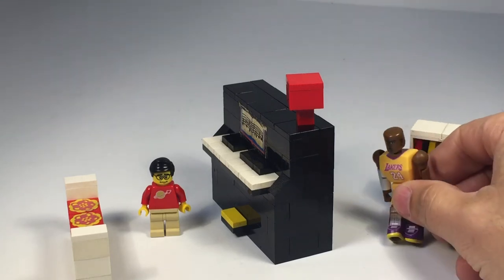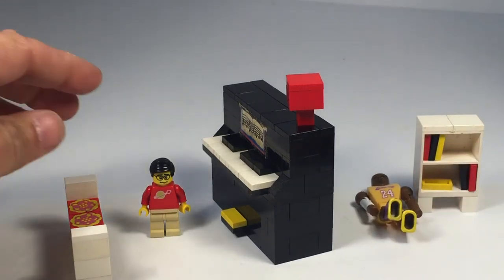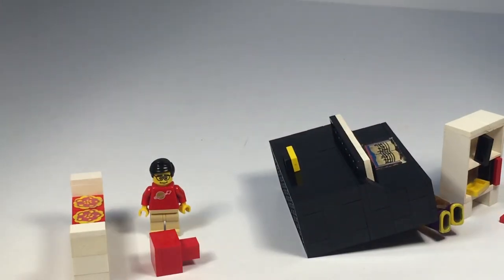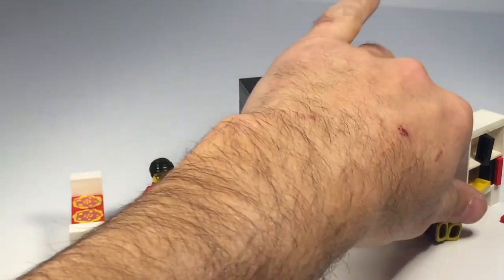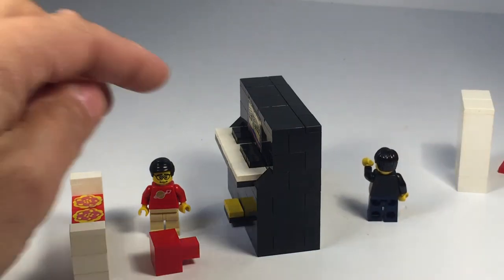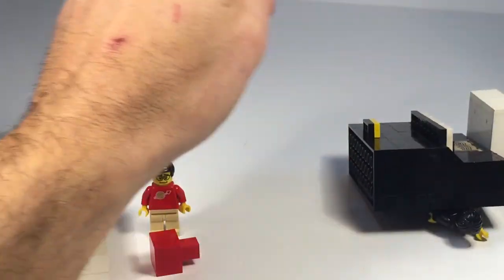But here's a Kobe Bryant. And that's how you do it. That's how we do the piano smash. Sorry, Kobe. Nothing personal. So you can just take a random figure and you can just smash it like that.